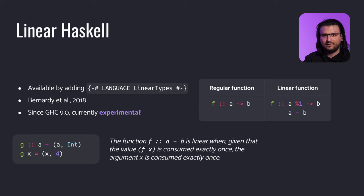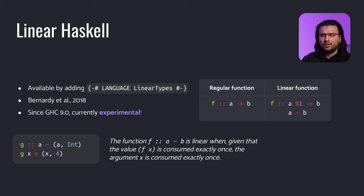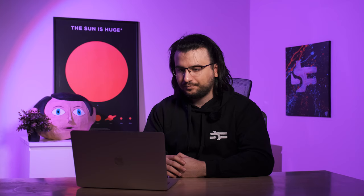To declare a function linear, we either insert %1 between the antecedent and the arrow, or substitute the arrow with the so-called linear arrow, colloquially referred to as lollipop. The true meaning of a linear function is this: the function f is linear when, given that the value f of x is consumed exactly once, the argument x is consumed exactly once.